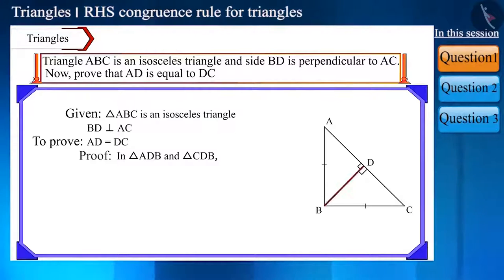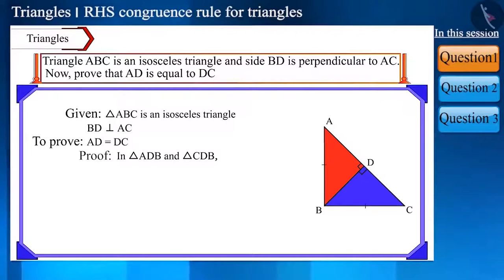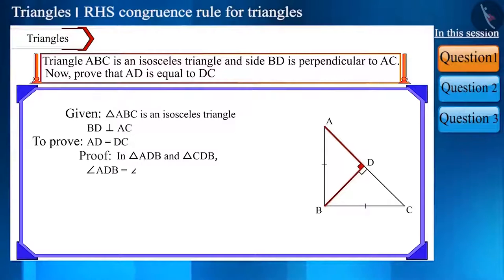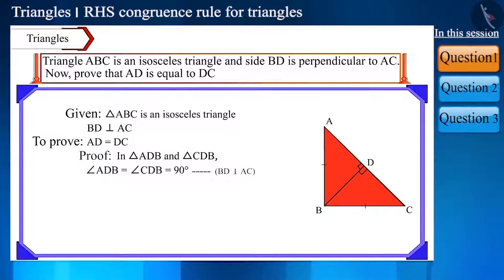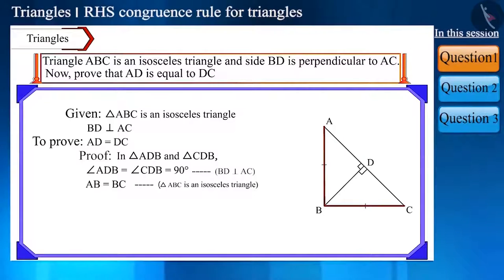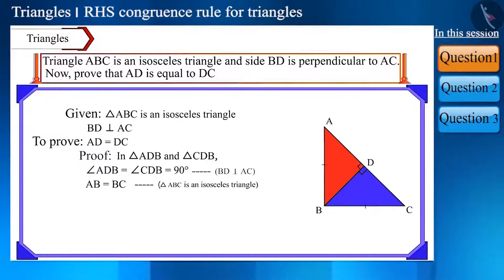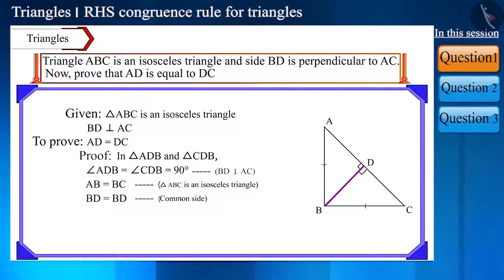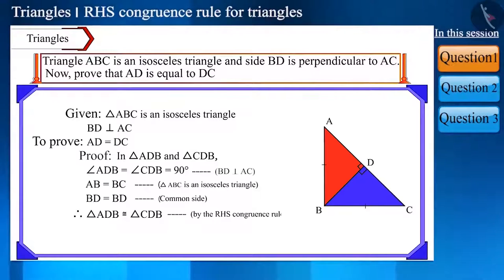Since side BD is perpendicular to side AC, in triangle ADB and triangle CDB, angle ADB is equal to angle CDB, which is equal to 90 degrees. Triangle ABC is an isosceles triangle, so side AB is equal to side BC. Respectively, in both these triangles, the hypotenuse will be equal. And side BD is the common side in these two triangles. Now we can say that these two triangles are congruent by the right angle hypotenuse side congruence rule.